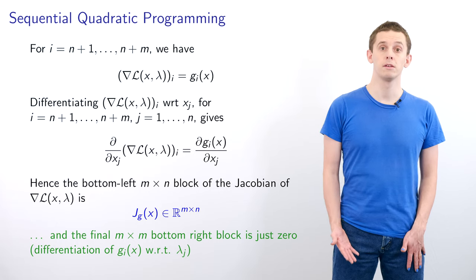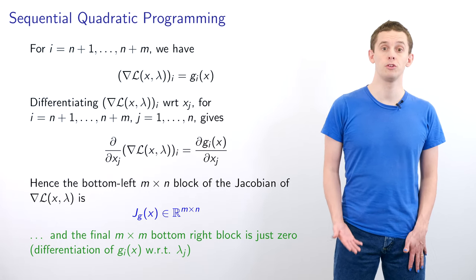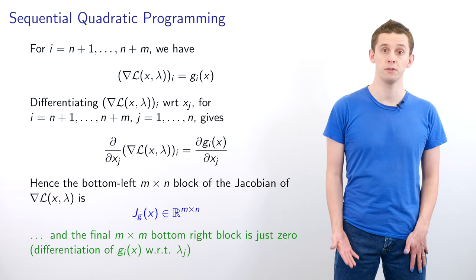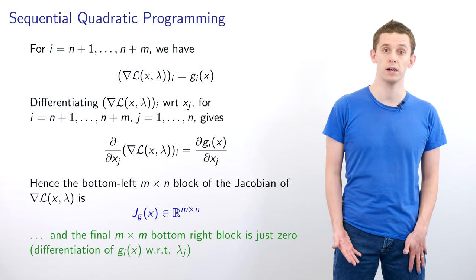Now let's look at i from n+1 to n+m. We know that the i-th component of the gradient of L for this range is given by g_i(x).